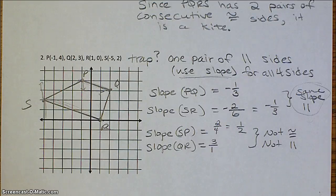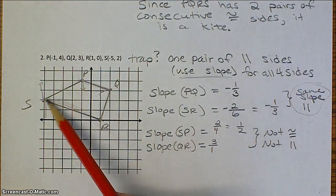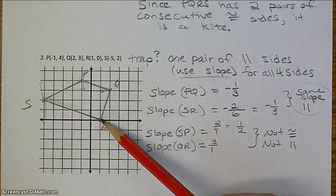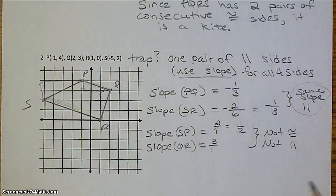Once you make this conclusion, then you want to decide if your trapezoid is isosceles or not. We can tell just by looking at these two segments, these legs, that QR is much shorter than PS, so it's not isosceles.